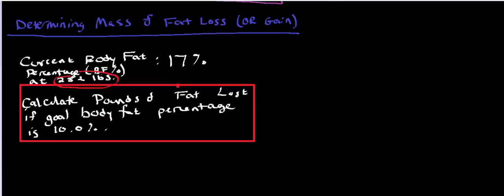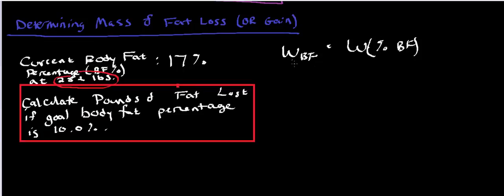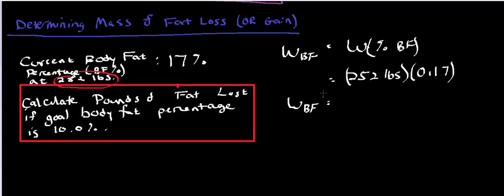The person's weight is 252 pounds. To find the weight of body fat, I take the total weight and multiply it by the percent body fat. So 252 pounds times 17%, or 0.17, gives us approximately 42.84 pounds of body fat. I'm going to round that to about 43 pounds.